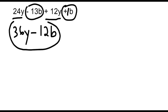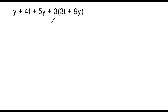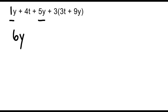Let's do another example. We have a really long algebraic expression, and to simplify this one we are going to have to combine like terms and use the distributive property. The first thing we do is identify like terms: we have 1y and 5y, which combine to give 6y. We bring down the plus 4t since there's nothing to immediately combine it with. Now we take this 3 and distribute it to each term inside the parentheses — 3 times 3t gives us 9t.